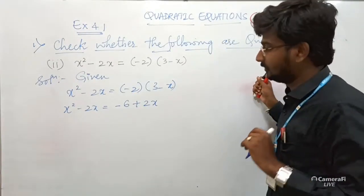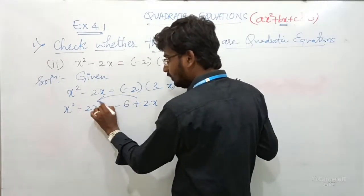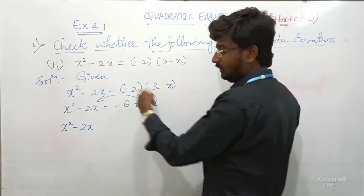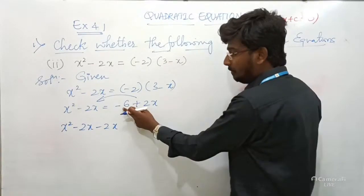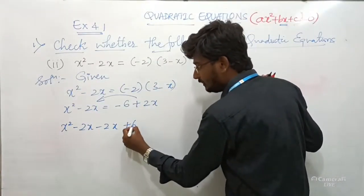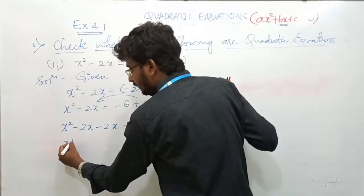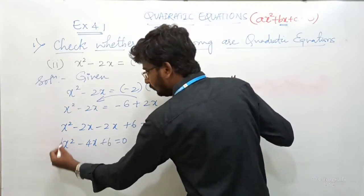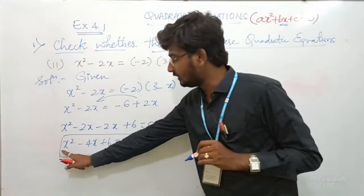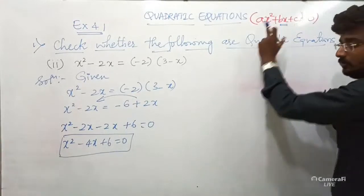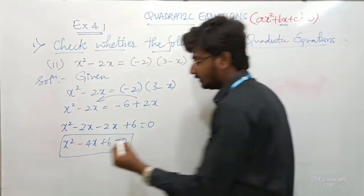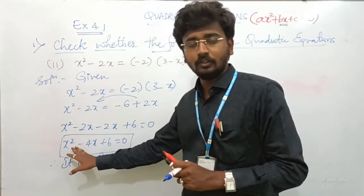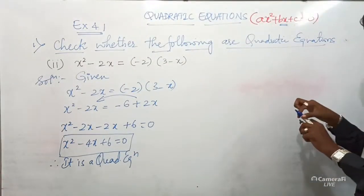Take all RHS terms to the LHS. X² − 2X − 2X + 6 = 0, which gives X² − 4X + 6 = 0. This is expressed in the standard form AX² + BX + C = 0, with an X² term present. Therefore, it is a quadratic equation. The reason is that the degree of the equation is 2.